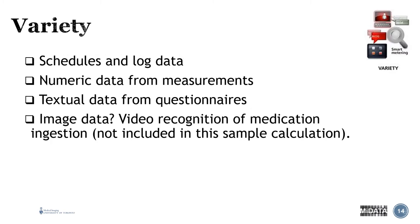For variety: schedules and log data are easy; numeric data for measurements is quite easy. Where it gets trickier is textual data from questionnaires — for instance, asking patients on the device 'how are you feeling today?' or 'how did you sleep?' Then there's image data — for example, video recognition of medication ingestion. If we wanted to go beyond just confirming delivery and check whether they actually ingested the medication, we could use video recognition that they actually put it in their mouth. There's another machine learning and artificial intelligence solution right there. Lots of different types of data from different sources, processed differently — that's variety.